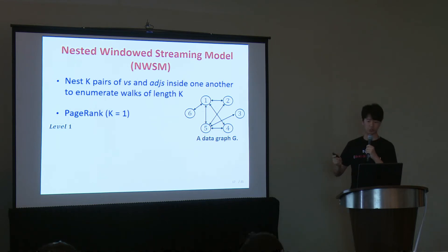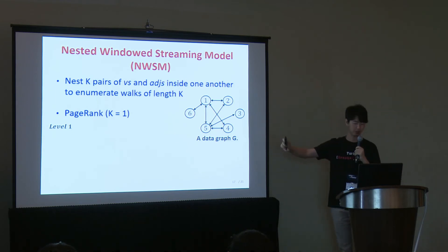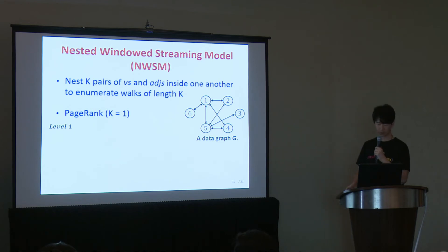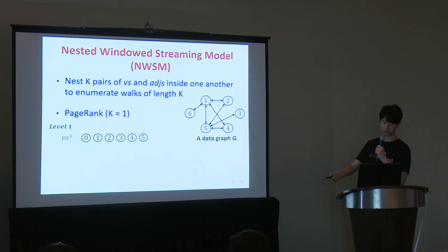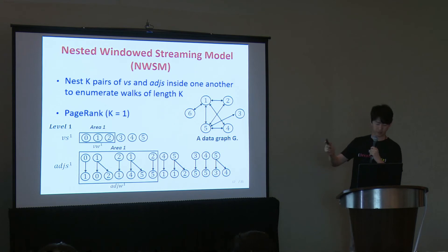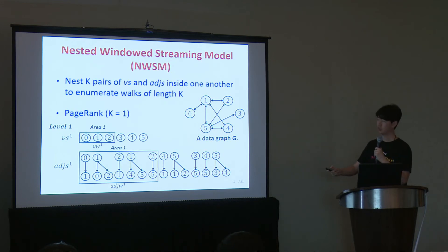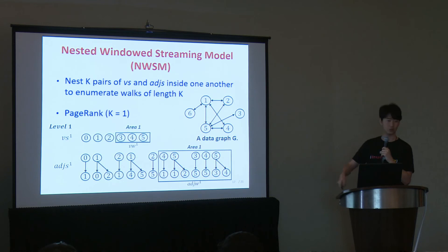NWSM nests k pairs of vertex stream and adjacency list stream inside one another to enumerate walks of length k. For the k=1 example with data graph g: given vertex stream VS1 and adjacency list stream, we place a window on each, stream their edges within area 1, perform PageRank computations, then slide to the next window and repeat.